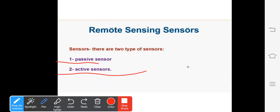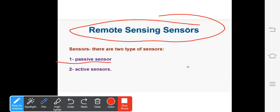These are the two sensors. There are two types of sensors: active sensors and passive sensors.